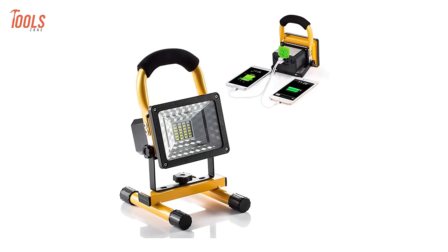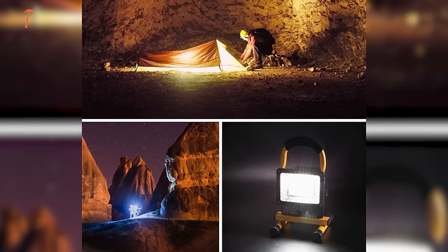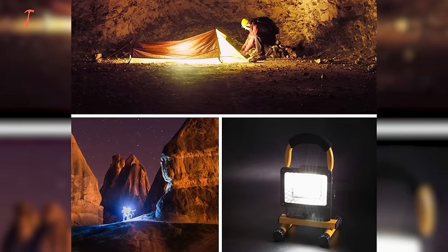The adjustable stand lets you position the light at any angle for best visibility. This light has a built-in power bank to charge phones in an emergency. Handyman can work comfortably in dark basements, attics, or outdoors using this multipurpose light.